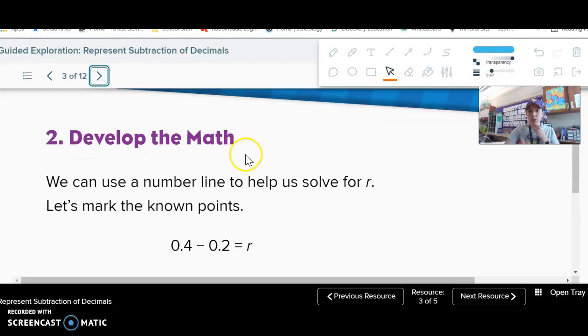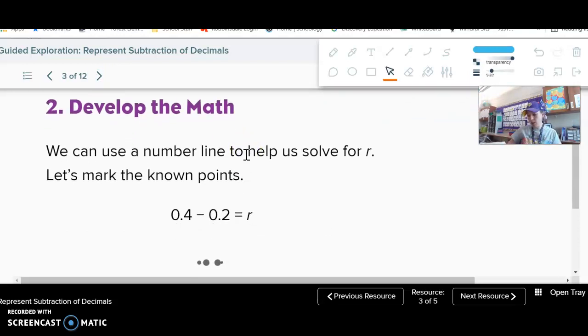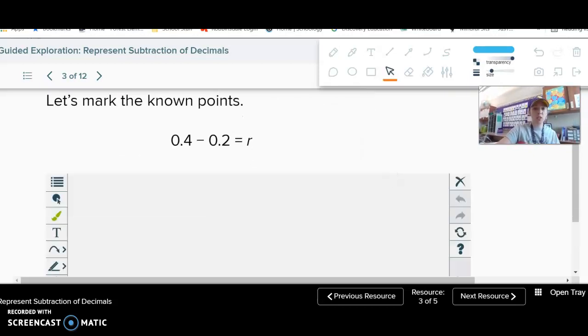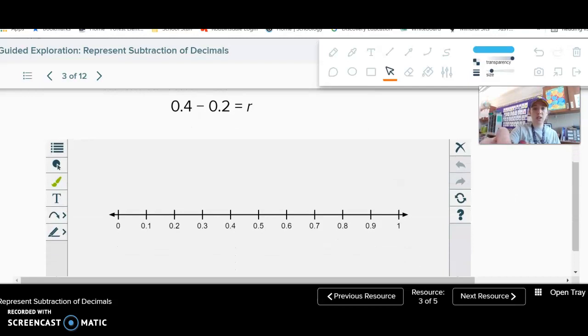We'll start by doing it on a number line. On your notes, go ahead and write 'we can represent subtraction using' and then you can write 'a number line,' because that is one strategy we can use. We start by marking what we know on our number line. Go ahead, do this with me - mark four tenths and then mark two tenths.